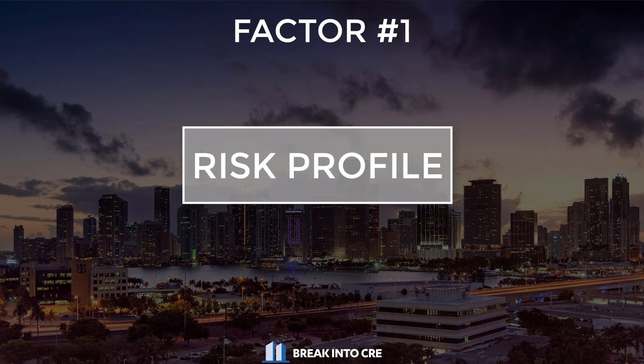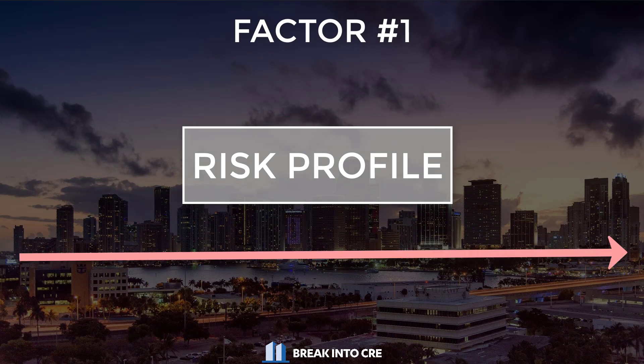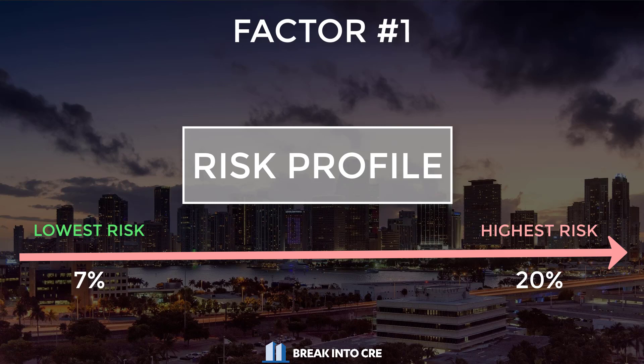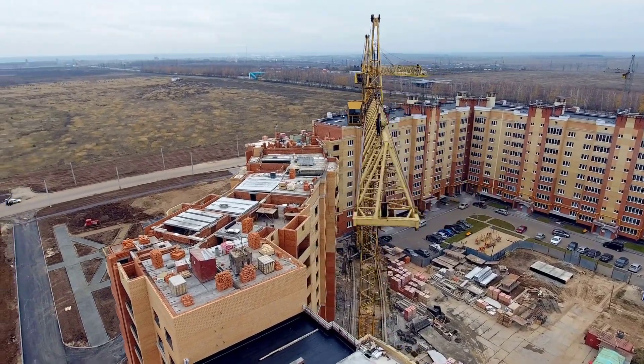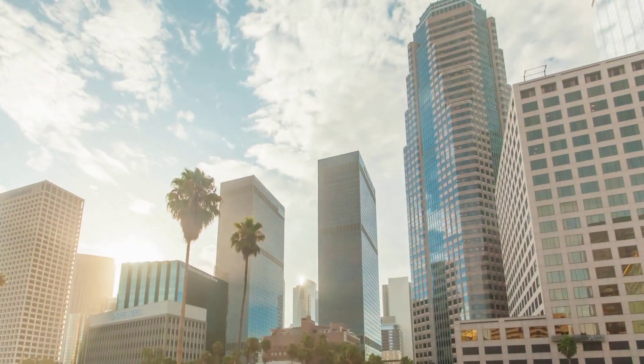To determine where that acquisition or development project is going to fit within those ranges, there are really going to be two main factors. The first is going to be the risk profile of the deal that you're analyzing. For the highest risk deals, you're going to be closer to that 20% end of the spectrum, and for the lowest risk deals, you're going to be closer to that 7% end. The rationale is that investors are going to price risk in the market based on what they believe the risk is for each deal. So in order to take on significant risk, like a major renovation project or a ground-up development project, most investors are going to need to be compensated with a higher internal rate of return, closer to the 20% end of the spectrum. For lower-risk deals in a core market, investors will accept a lower annualized rate of return.